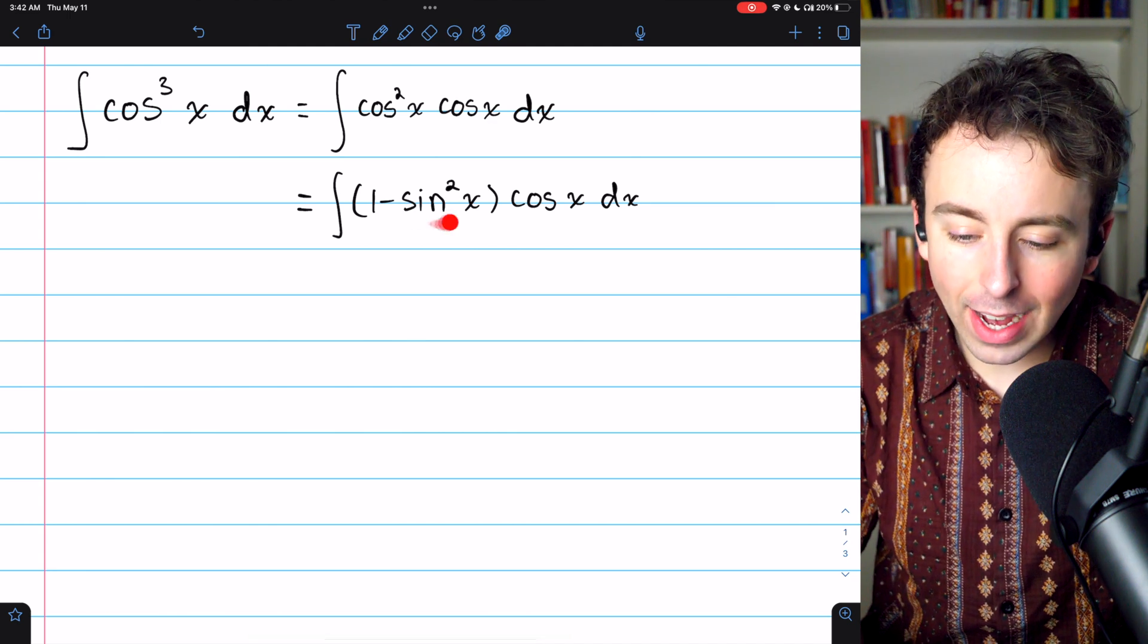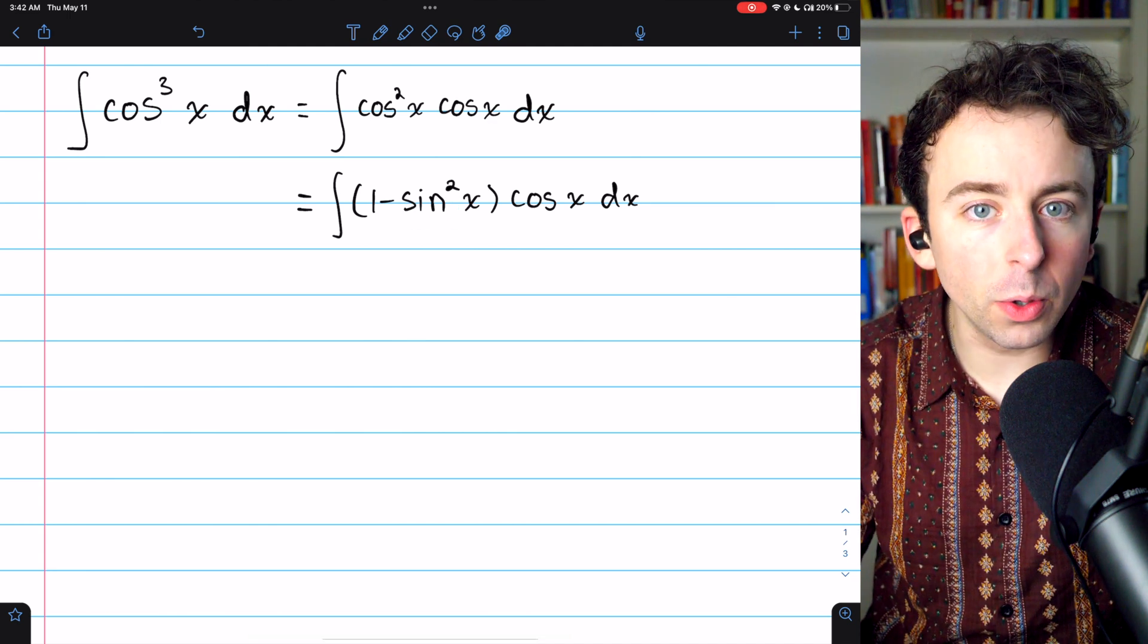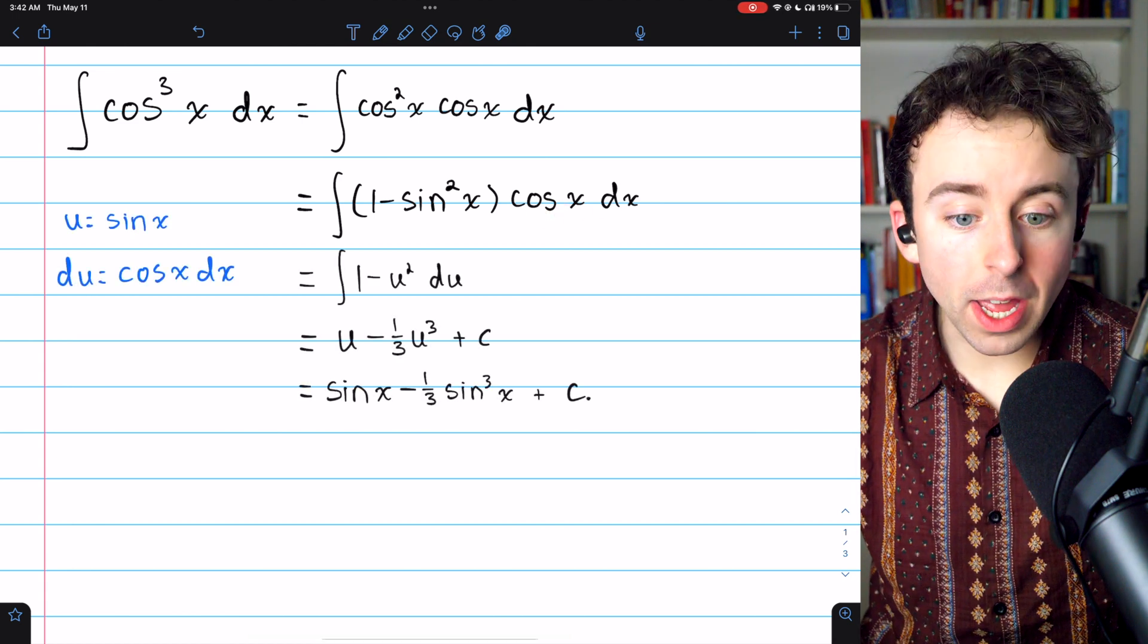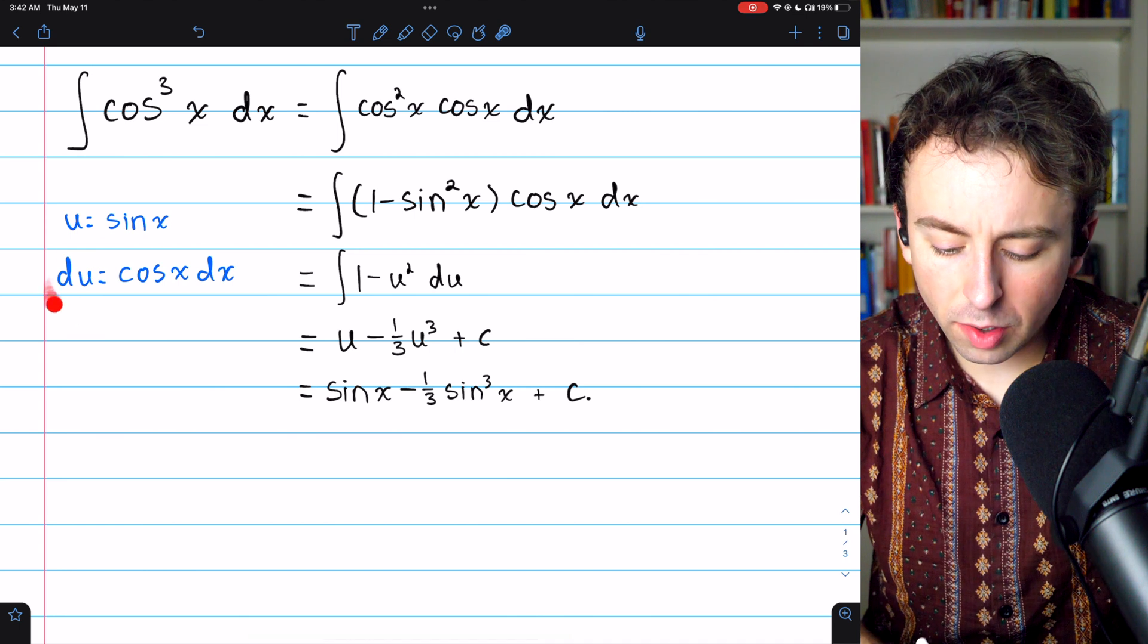Let u equal sine x, and then du will be cosine x dx, cleaning up the rest of the integral. And there you have it. u is sine x, du is cosine x dx,